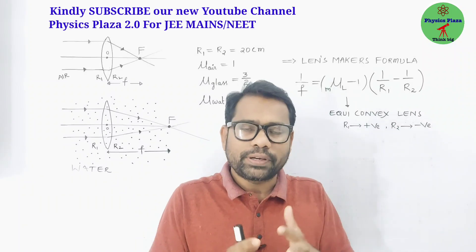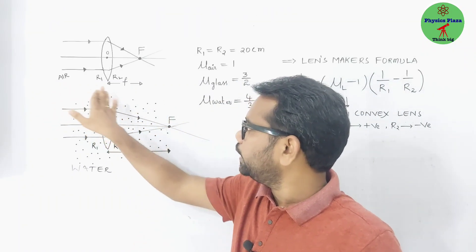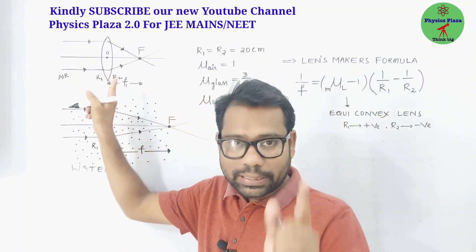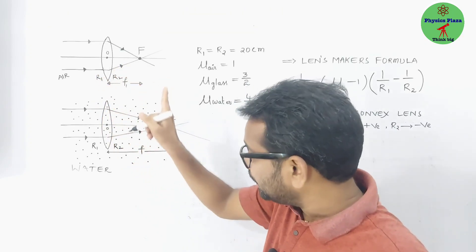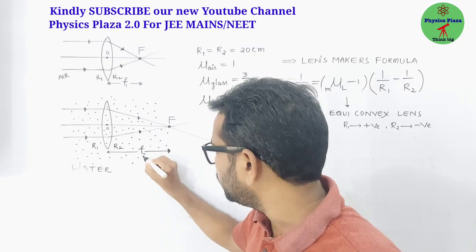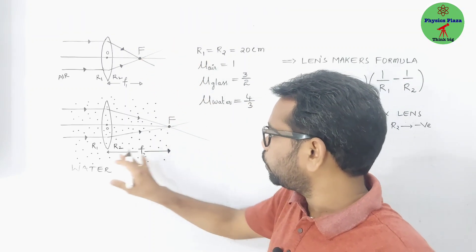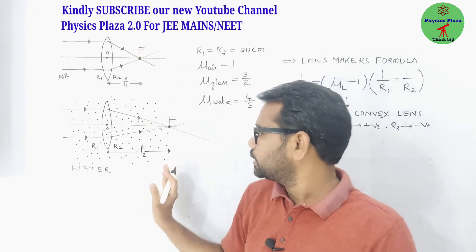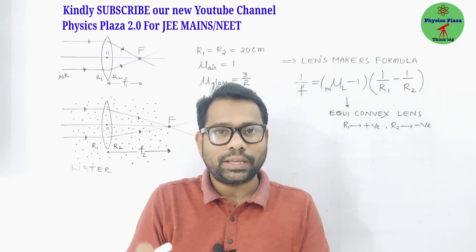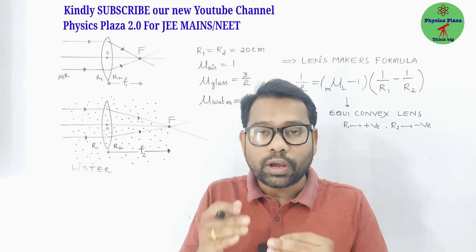Theoretically, when a lens is placed in air, let's say its focal length is f1. Now, when the same lens is placed in water and we find f2, we get that f2 is larger. So it's very clear that when a lens is placed in water, its focal length increases — and this can be seen with a ray diagram. This applies whether it is a concave lens or a convex lens.